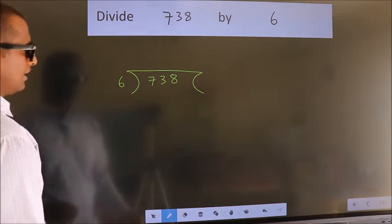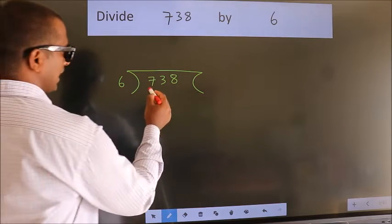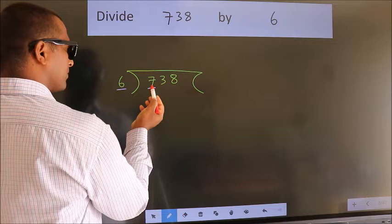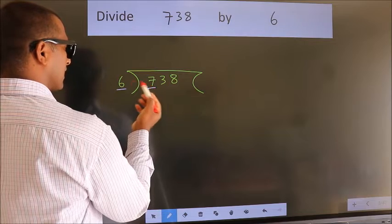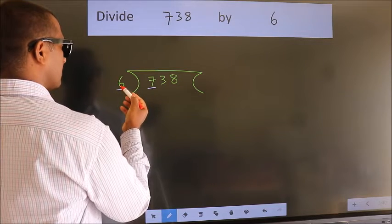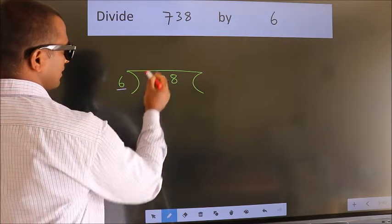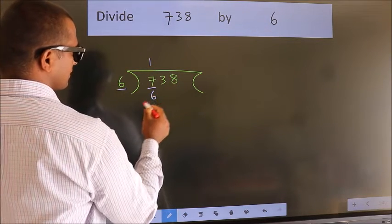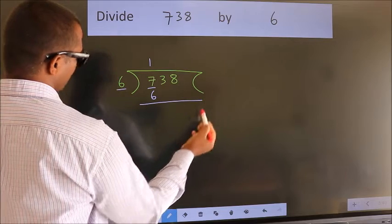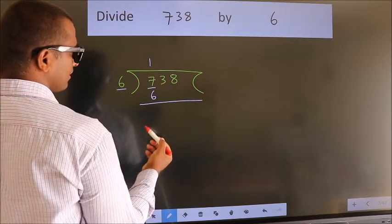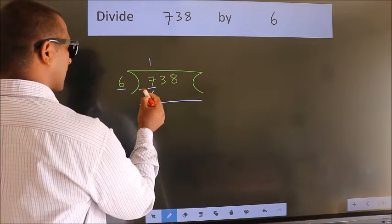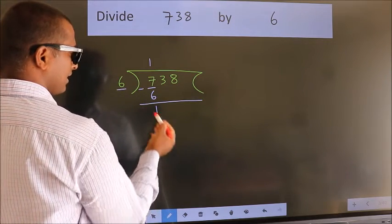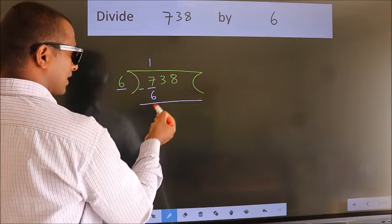Next, here we have 7, here 6. A number close to 7 in the 6 table is 6 ones 6. Now we should subtract. We get 1.